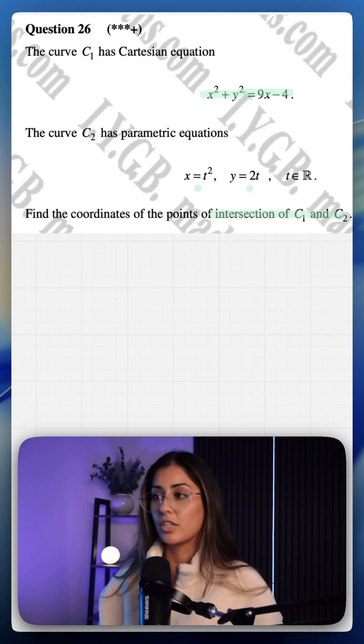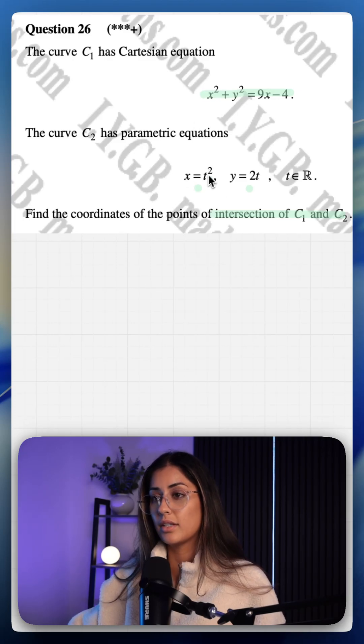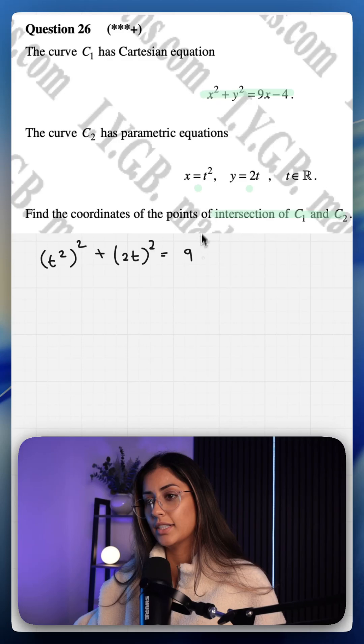To do that you're essentially just equating the two together by substitution. So we can sub in x equals t squared here and the entire thing is squared plus y squared which is 2t squared. This is equal to 9x which is t squared minus 4.